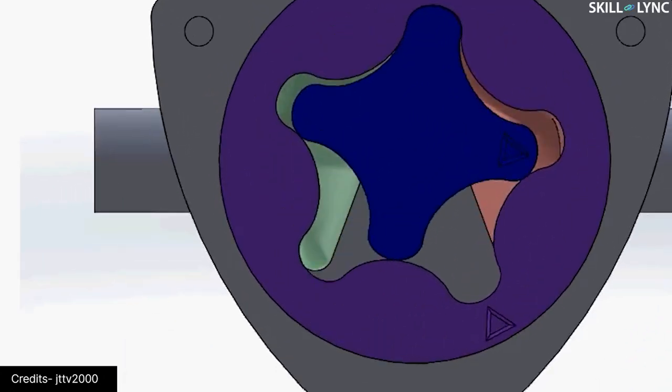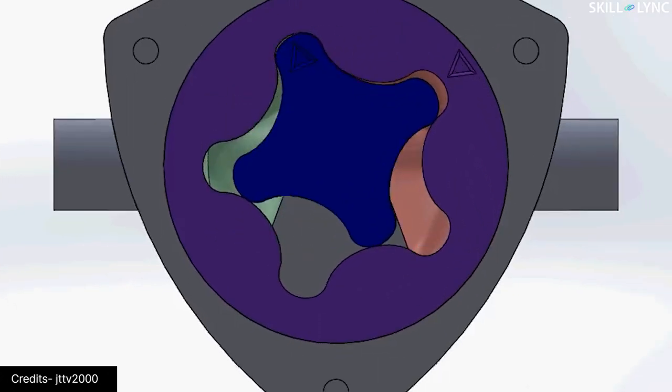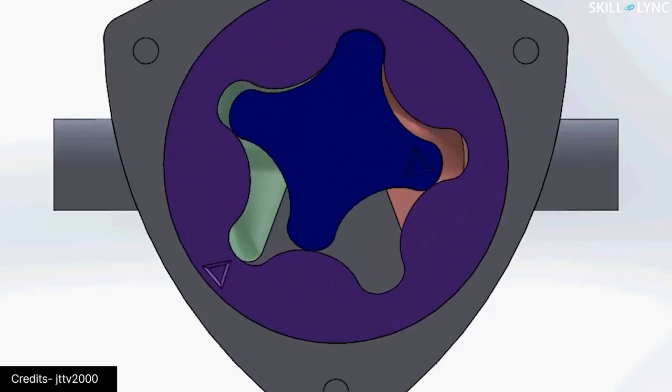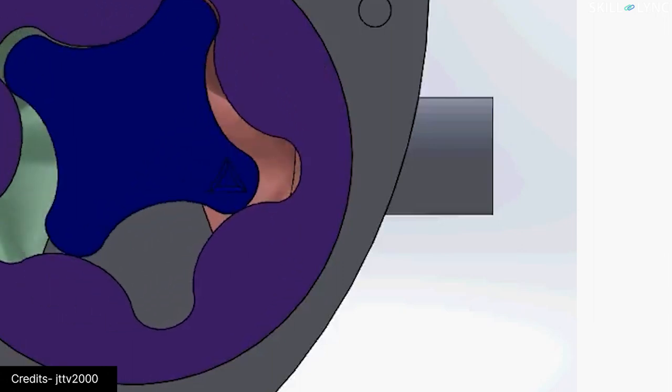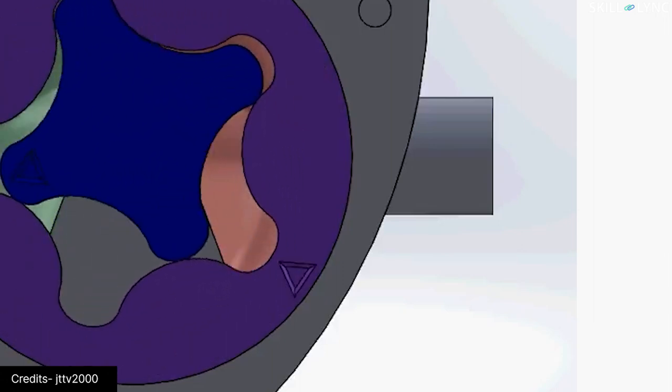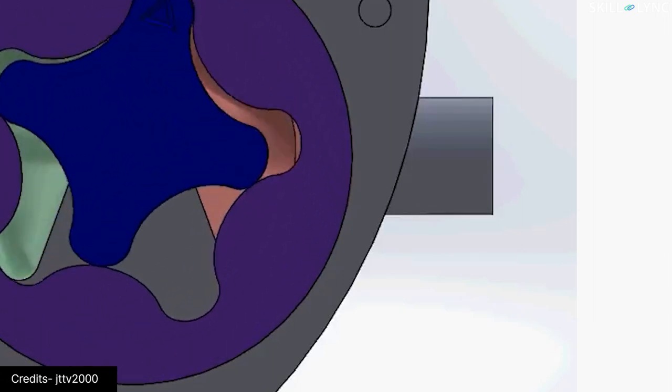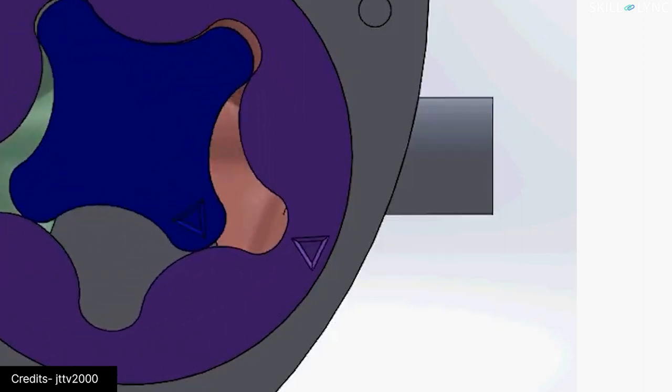The fluid enters the gear rotor through an inlet port. The fluid is then transported to the discharge port by the internal gear. Once the fluid is at the discharge side, the area between the two rotors decreases due to its shape. This forces the liquid out through the discharge port.